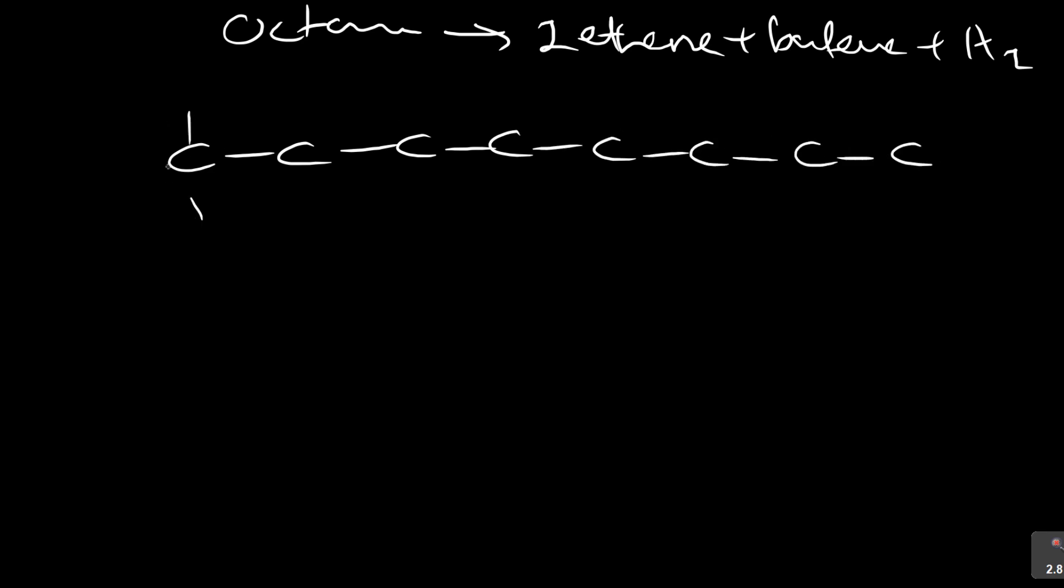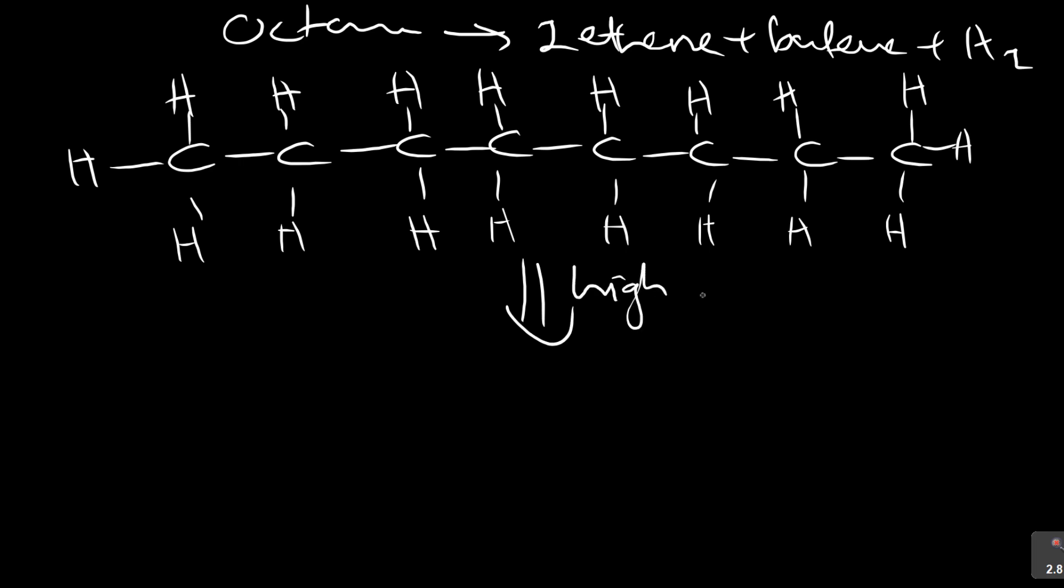Octane has eight carbons—these are long chain molecules. In our syllabus we go up to eight, but they go up to carbon 30, carbon 60, very large. So we're going to break it into smaller molecules with high heat and high pressure.